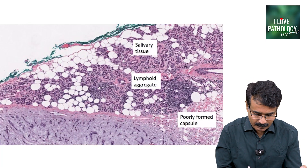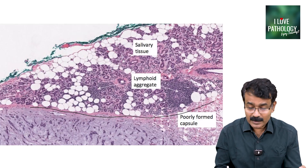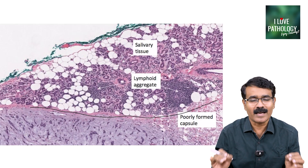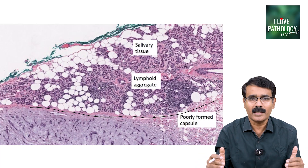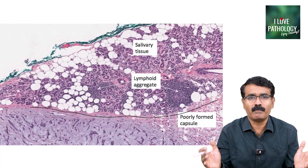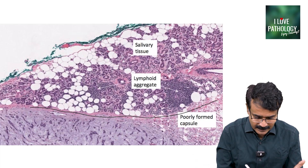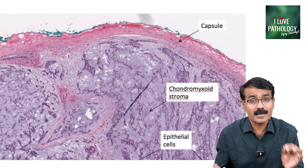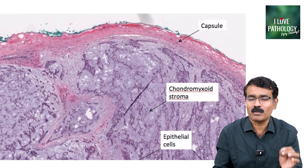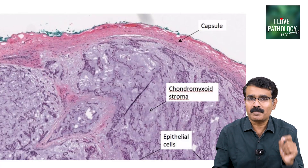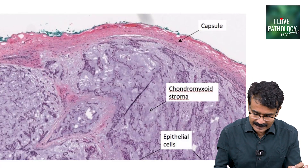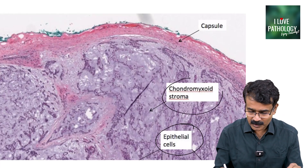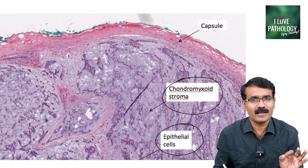Microscopically, you can make out that the capsule is poorly formed — it does not have a very well-defined capsule. It's a circumscribed tumour. The characteristic microscopic feature of pleomorphic adenoma is the presence of chondromyxoid stroma as well as the epithelial cells — two components: the chondromyxoid stroma and the epithelial cells.